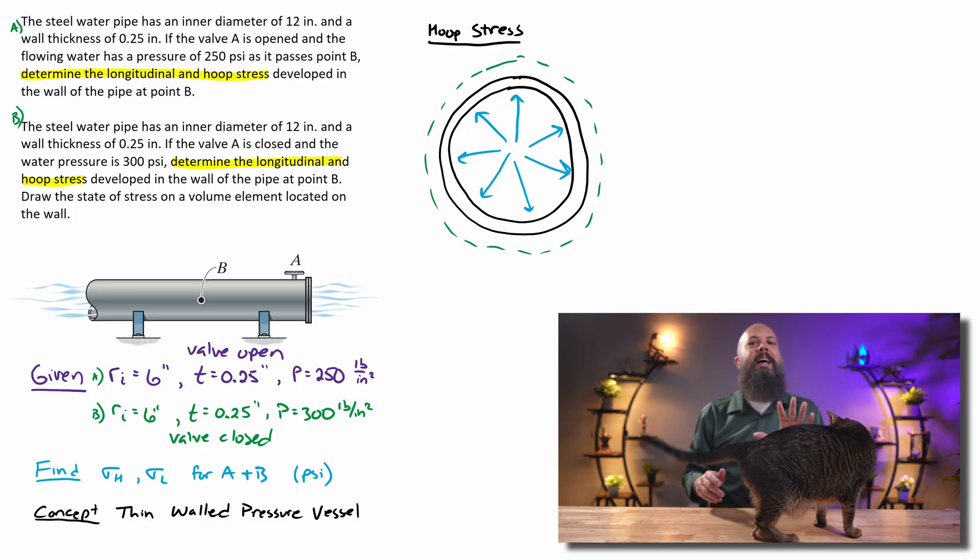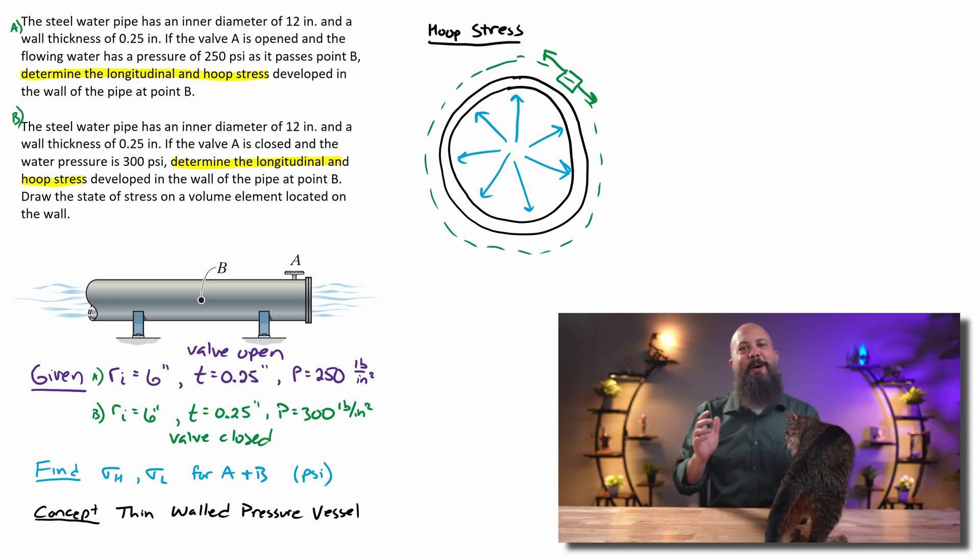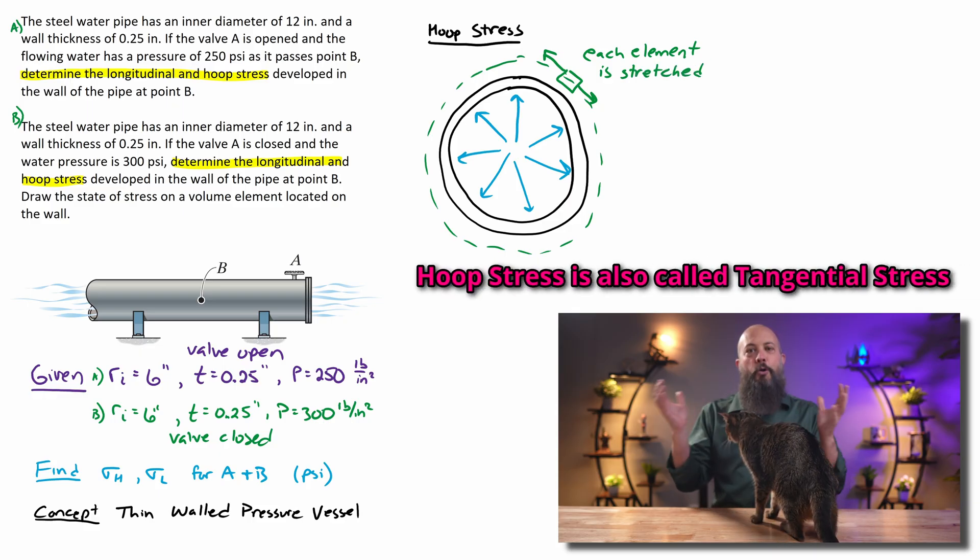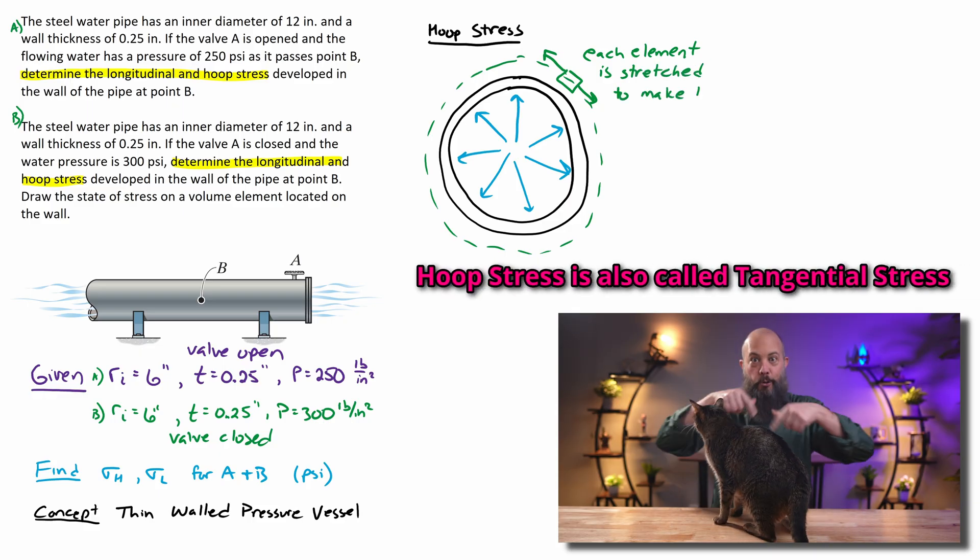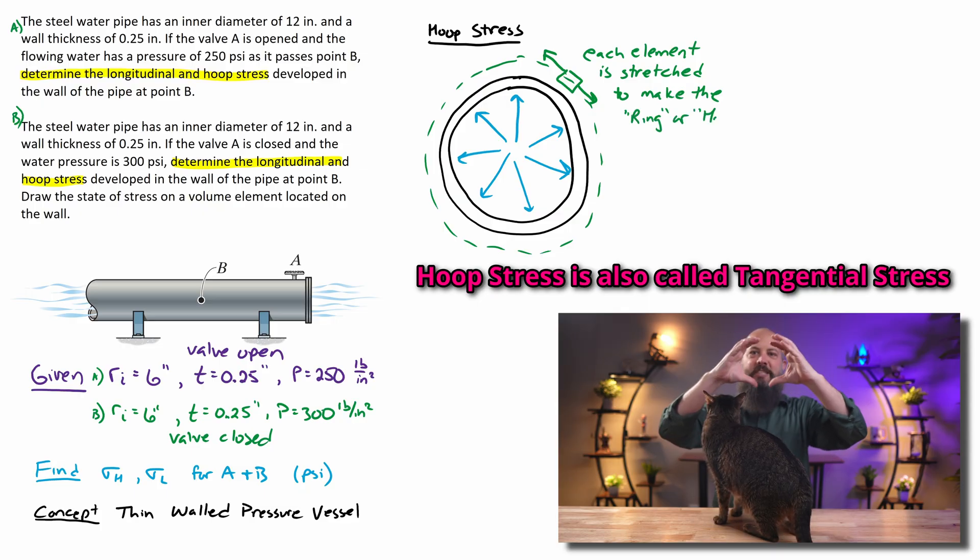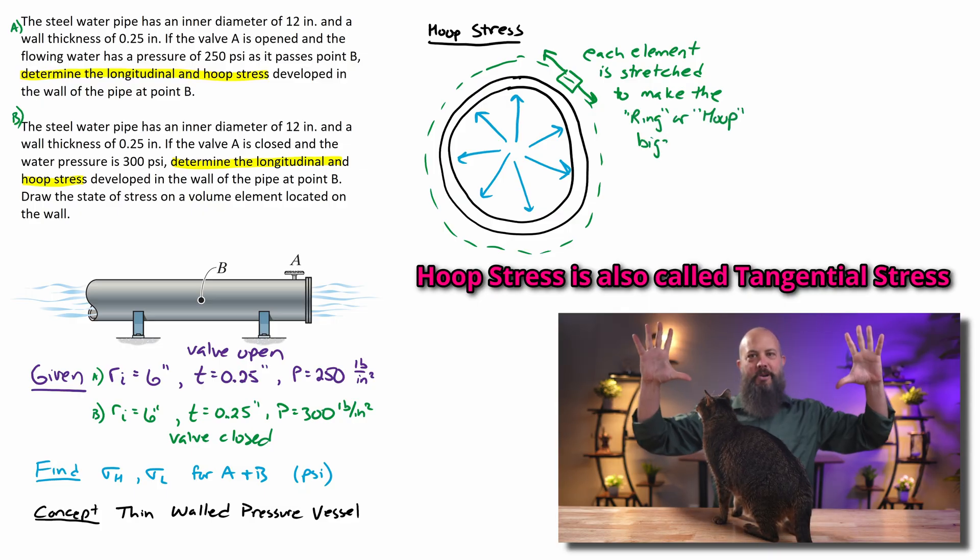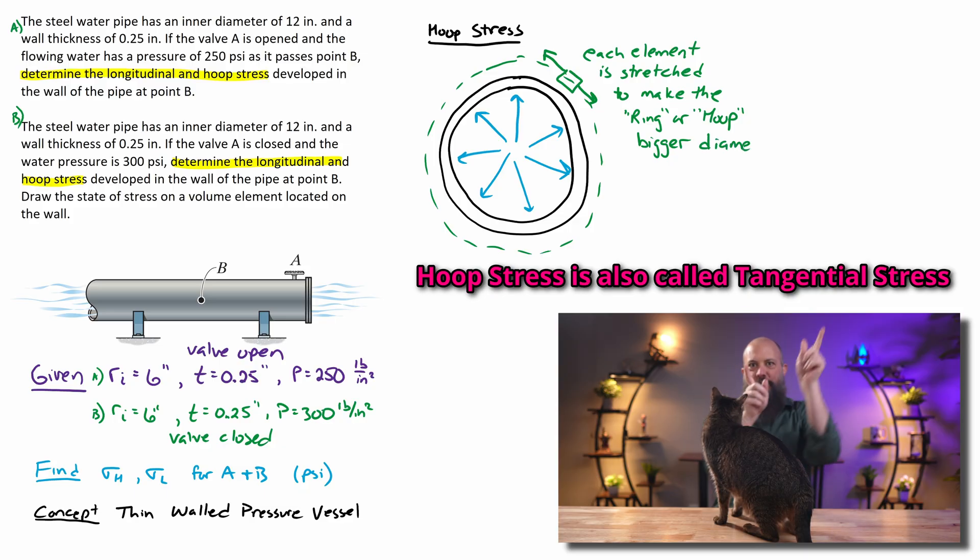So two types of stress are going to come up for pressure vessel problems. One is hoop stress and one longitudinal stress. Hoop stress, just think of like a hula hoop. The actual ring is expanding and getting bigger as a result of all the pressure pushing outwards in all the different directions.